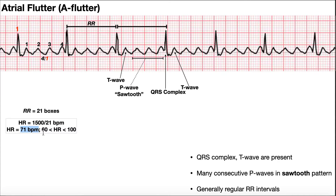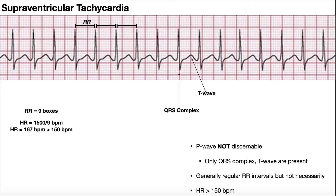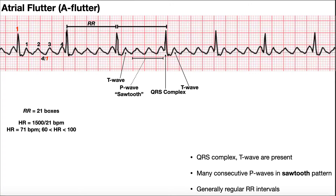That heart rate is between 60 and 100, so you'll notice not only is it not tachycardic, it's not a supraventricular tachycardia in the sense that the heart rate is greater than 150, even though this is a subtype of it. That's why when you're looking at this, that criteria of being greater than 150 does not work. What we really want to do is look for this sawtooth pattern, and when we have that, that gives away that we've got atrial flutter.